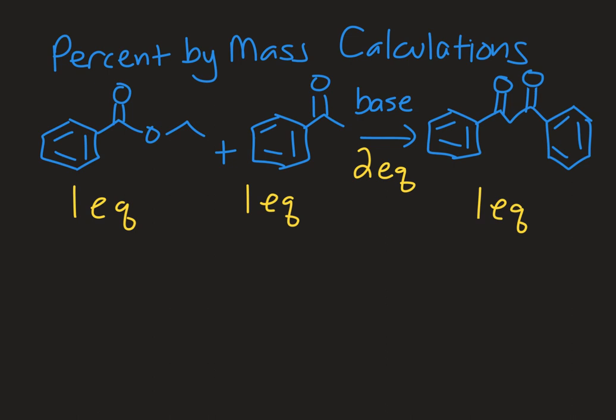You can see here in this reaction scheme, I have an ester, in this case ethyl benzoate, and I'm going to react that with acetophenone. So this would just be a ketone functional group in a coupling reaction that uses a base to give me this beta-di-ketone.